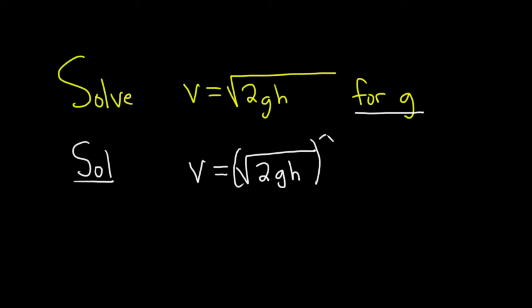So I'll put a parenthesis and a 2 here, and I'll put a 2 here. This gives us v squared equals. And when you square the side, the square root goes away. So you simply get 2gh.